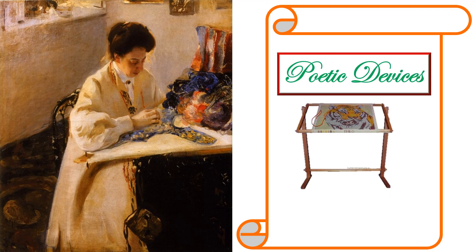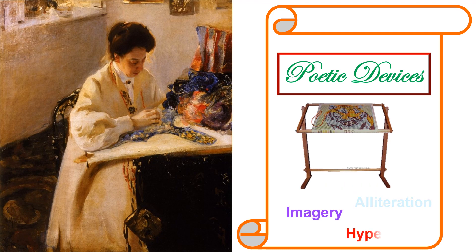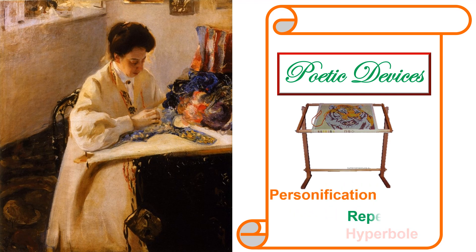Edwin Rich makes use of several poetic devices in Aunt Jennifer's Tigers. These include anaphora, alliteration, imagery, hyperbole, personification, repetition and transferred epithet, which I am going to explain in detail one by one. So let's get started.